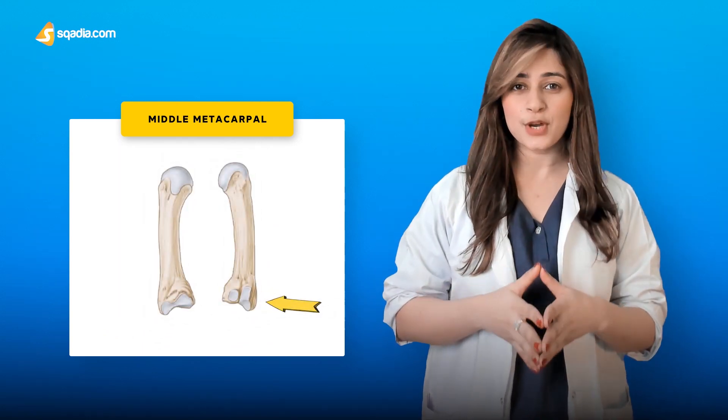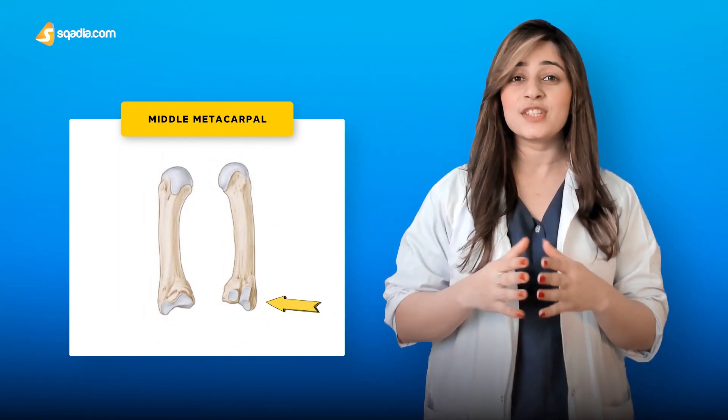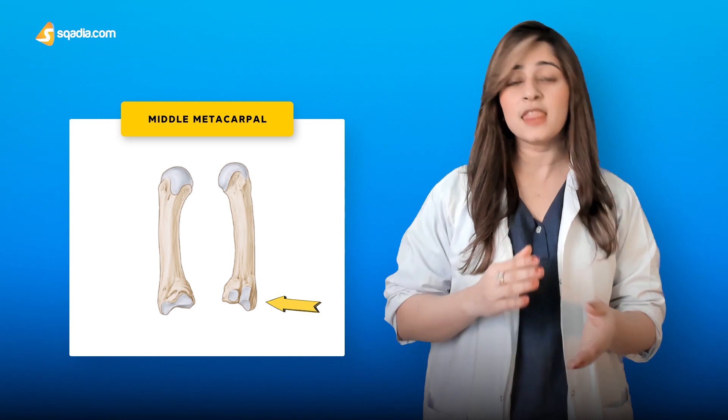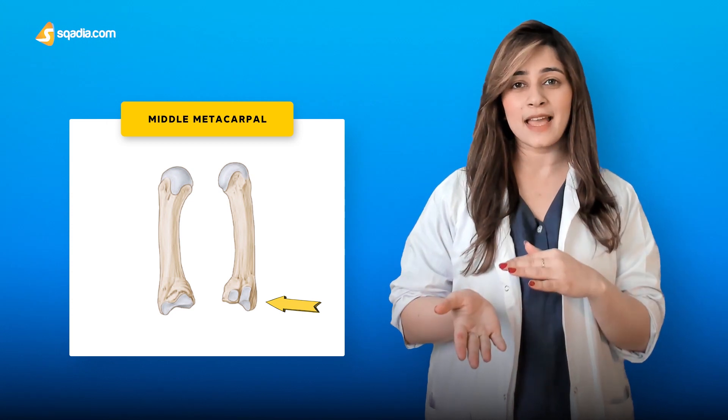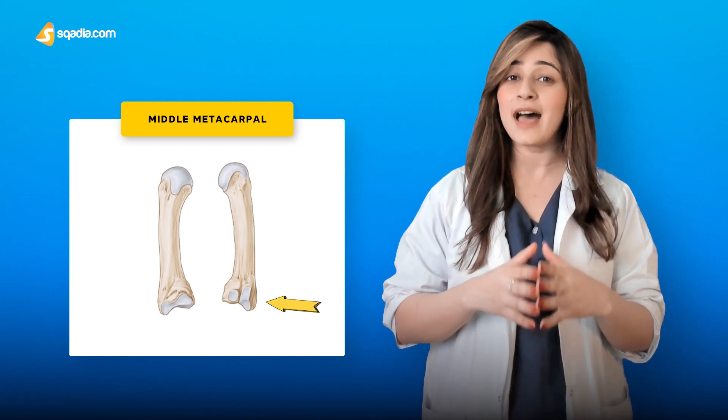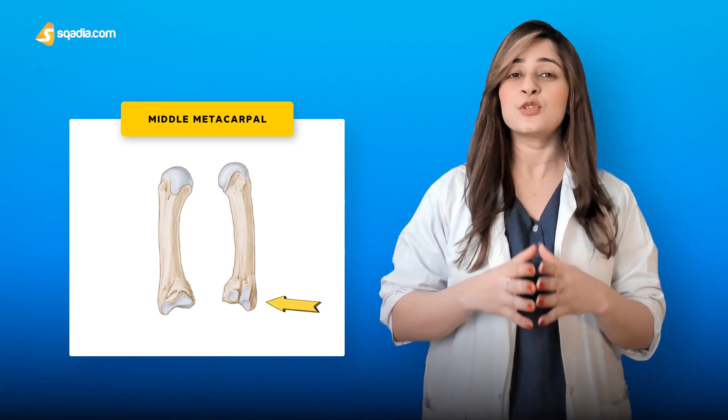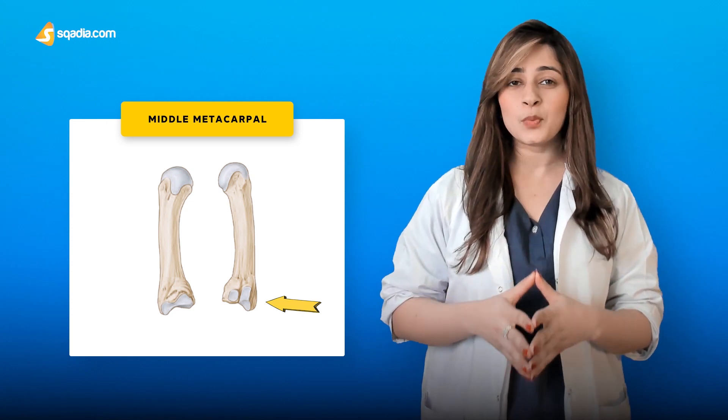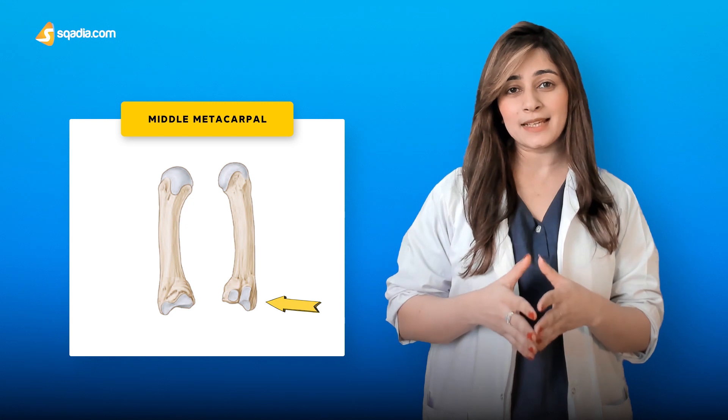Looking at the middle metacarpal, it has a styloid process directed on the dorsal side into an angle located between the capitate and the trapezoid bone. This covers all the anatomical landmarks of the metacarpal bones.